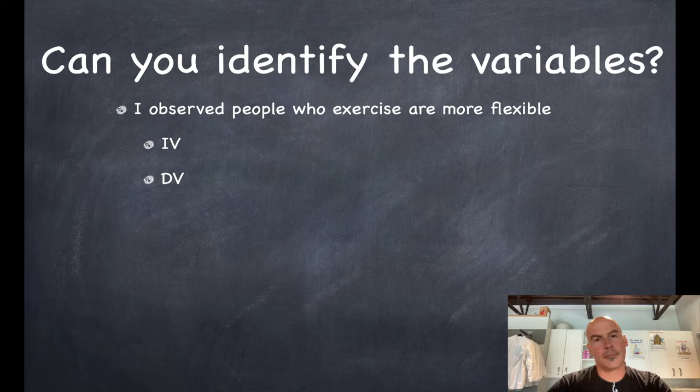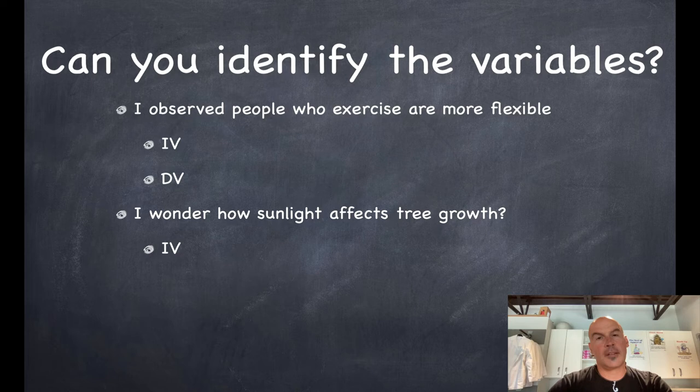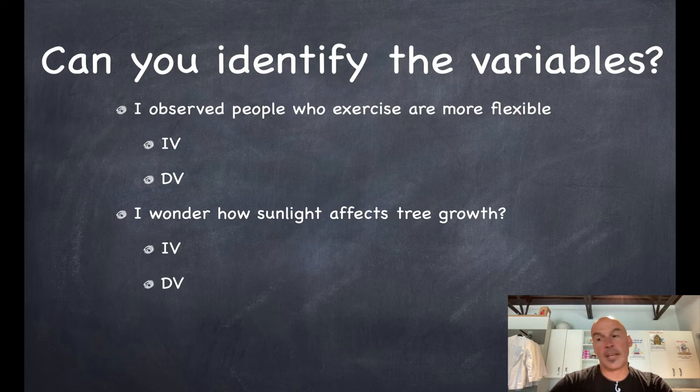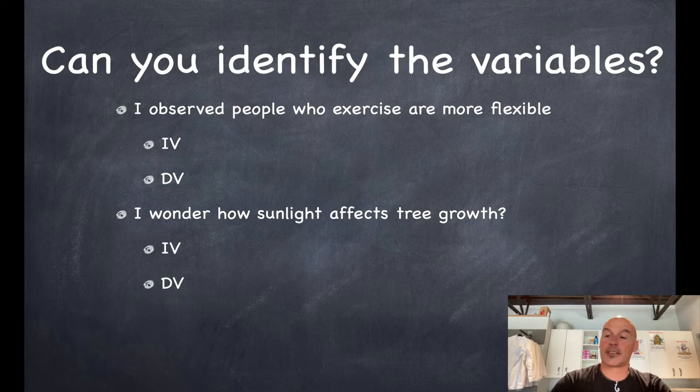And I wonder how sunlight affects tree growth. Again, what's your independent and what's your dependent variable? Again, your independent variable is the one that you change, that you can manipulate, and the dependent variable is the one that you measure that changes as an effect of you changing the IV.